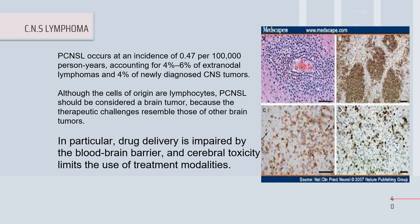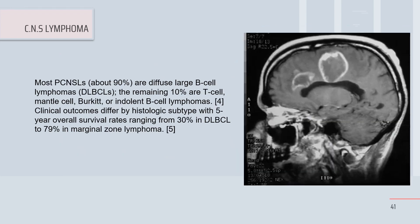There are significant therapeutic challenges in CNS lymphoma treatment. The blood-brain barrier impairs drug delivery, and chemotherapy administration to the brain is not easy. Cerebral toxicity also limits treatment options. This patient is treated based on brain tumor guidelines — mostly diffuse large B-cell lymphoma, with remaining cases being T-cell lymphoma, Burkitt, or indolent lymphoma.